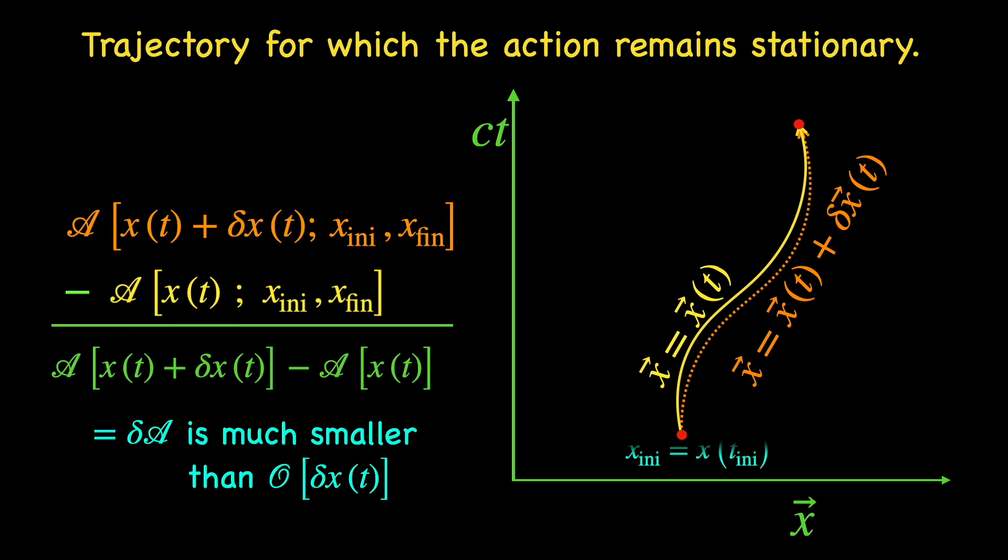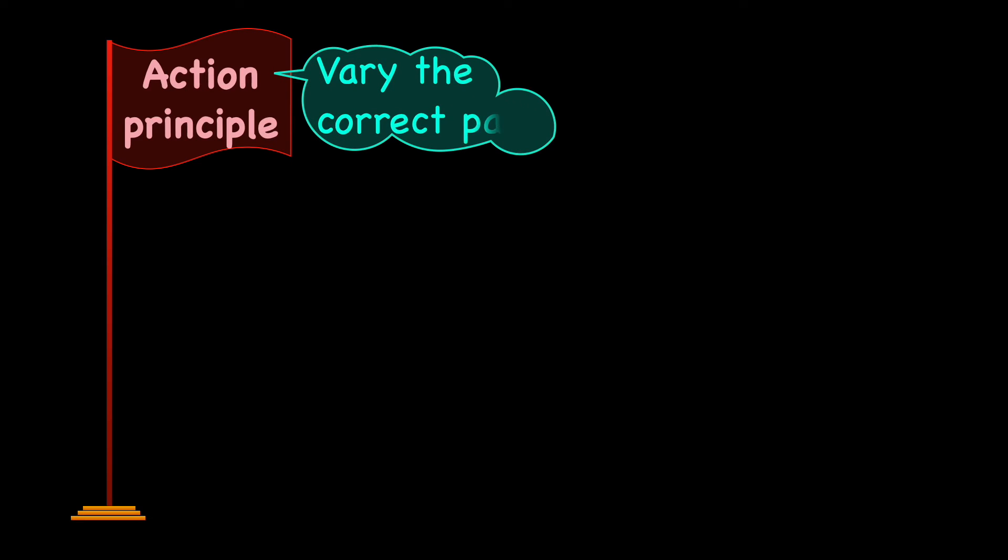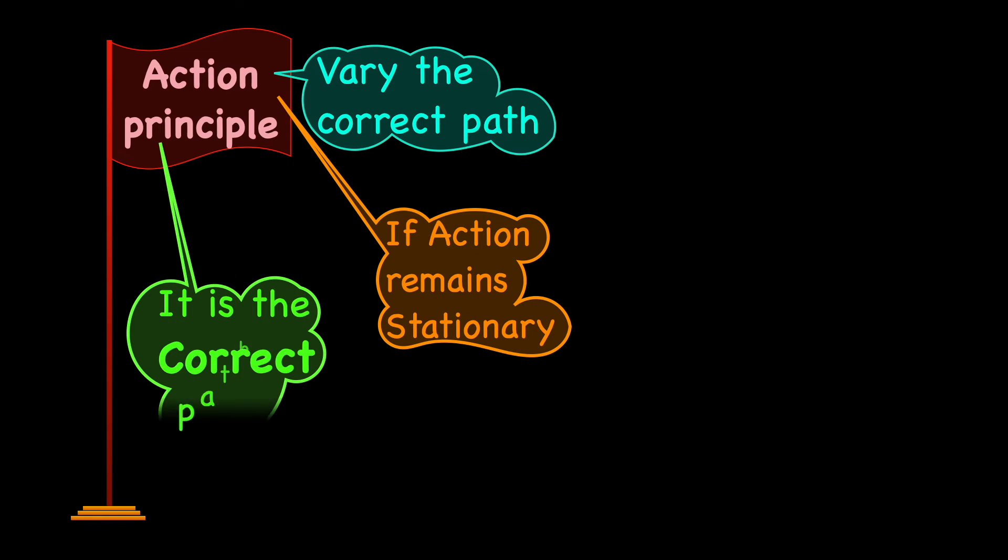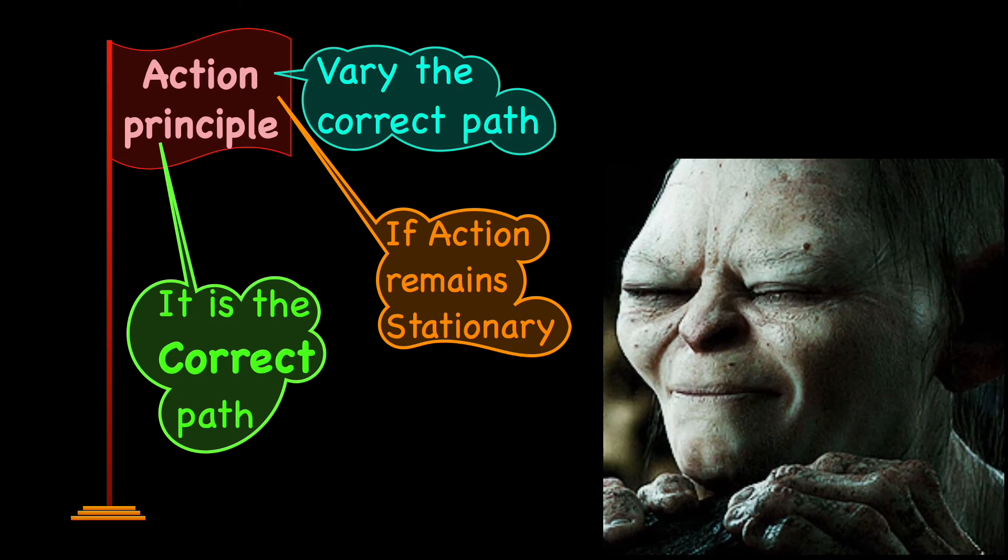Oh, and by the way, we keep the two endpoints fixed mathematically means the variation of the path delta x(t) is chosen such that its value is zero when we put t equals t_initial and t equals t_final in it. Now from what the action principle says about the correct path and what it means mathematically, it sounds like we have to know the correct path beforehand so that we can vary it slightly to check if the action remains stationary. But if we know the correct path to begin with, it means we already know the answer we seek. What's the point of the action principle then?